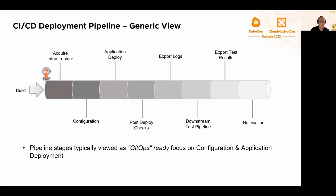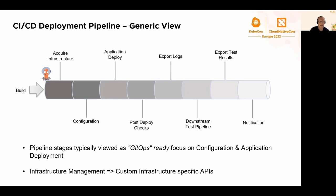The stages in such a pipeline that would be typically GitOps-ready would be those more typical to application deployment and the application of Kubernetes manifests right onto a cluster. So in terms of this generic pipeline view, we could look at configuration and application deployment as more typical to the view of GitOps. Infrastructure management in particular would not be typical, as it stands today, to GitOps. Infrastructure management typically involves the use of custom infrastructure APIs. So provisioning of infrastructure, you would typically point to that infrastructure provider's APIs to create those environments, which typically don't lend themselves quite well to the adoption of GitOps.